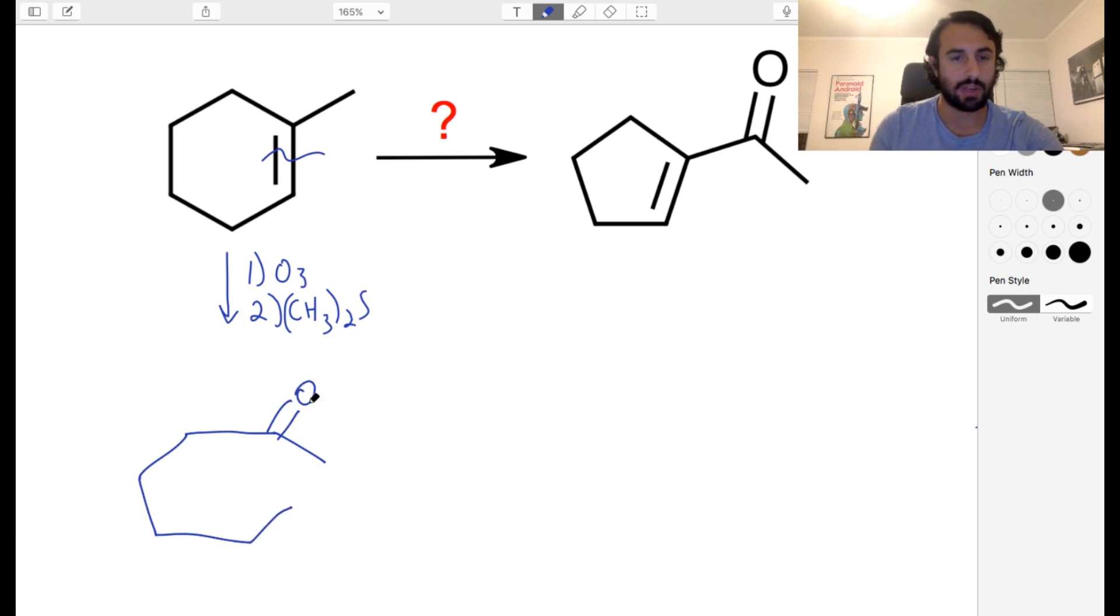So we've got this carbon and then counting out the carbons, there is the other carbonyl. So there's that, there's CH3. So we just popped open that ring. We've got this seven-carbon linear molecule now and we wanted that reductive workup because we don't want that carboxylic acid there. We want the aldehyde.